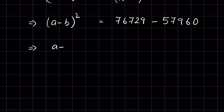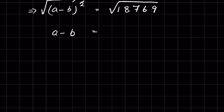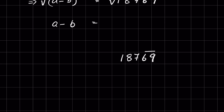To remove the square, we take the square root of both sides, so a minus b equals the square root of 18769. To find the square root of such a large number, we group the digits in pairs from the right.